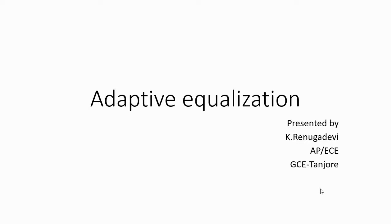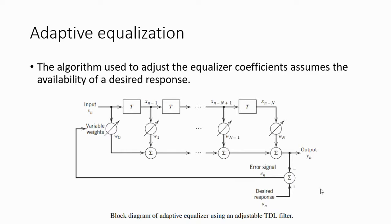Hello learners. In this video we are going to see adaptive equalization. This algorithm is used to adjust the equalizer coefficient, assuming the availability of the desired response. This is the adaptive equalizer, and by adjusting the equalizer coefficient, we can get the desired response. This is the blank diagram of adaptive equalizer with adjustable tapped delay line filter.